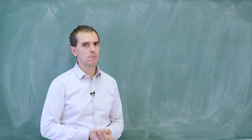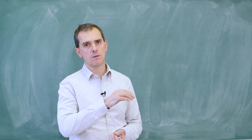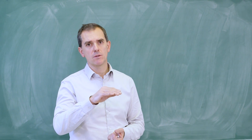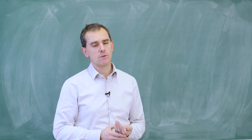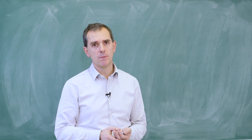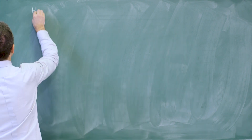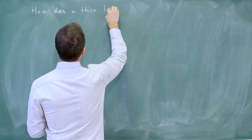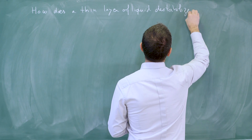When you paint a ceiling, you don't want the paint to fall on the floor. And if you don't pay attention, this will happen. And so the question we want to address is: how does a thin layer destabilize?